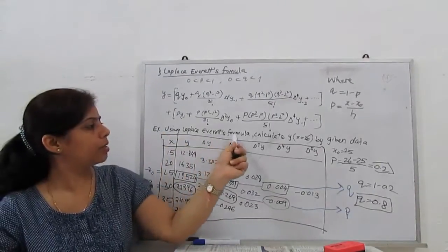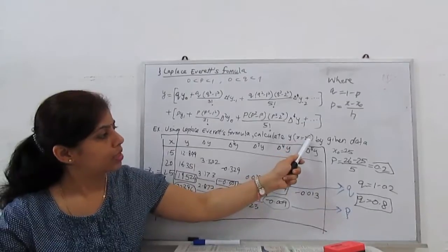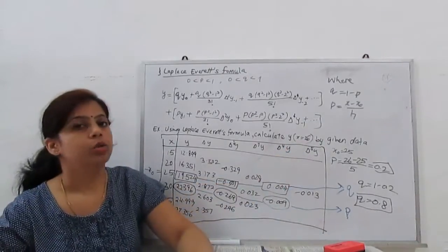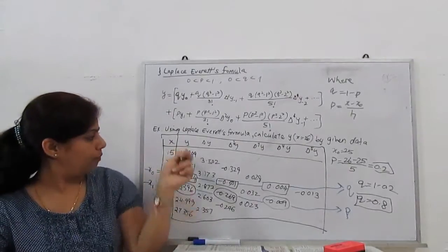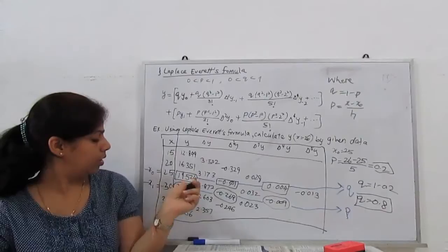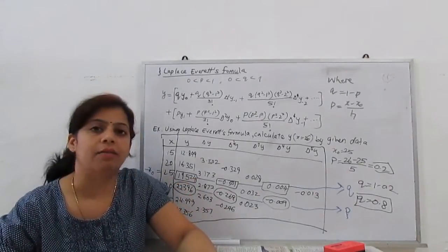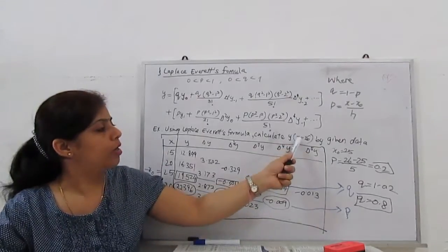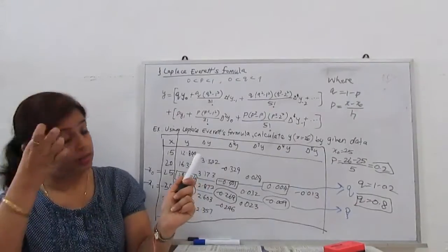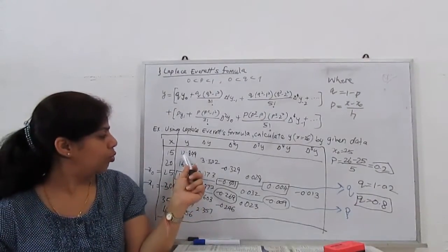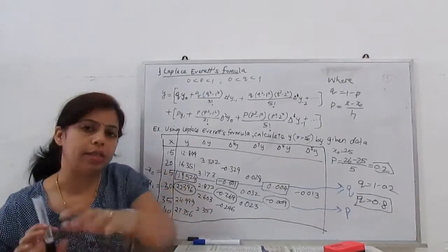Using the Laplace formula, calculate Y at X equal to 26 by the given data. They give X and Y - X and respective value of Y. X is 15, 20, 25, 30, 35, and 40, and they want value of function Y at point X equal to 26. The Y is respectively given 12.849, 16.351, and so on.